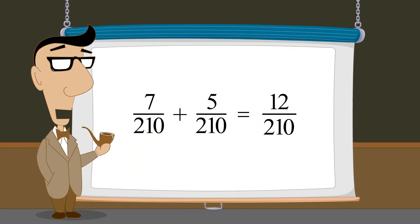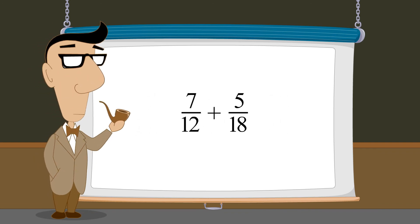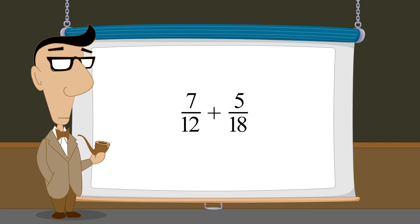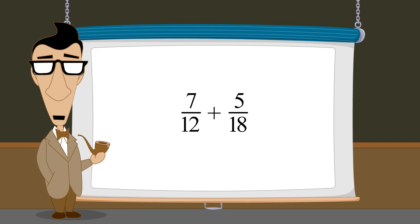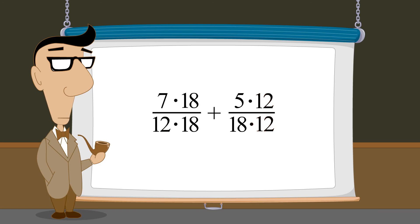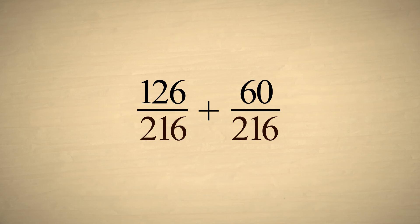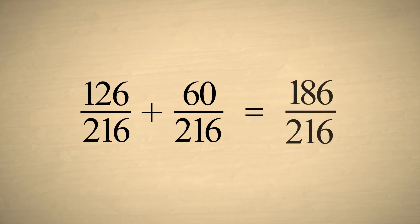To see the advantage of using the least common denominator, let's take the example we looked at in the beginning of the lecture: seven-twelfths plus five-eighteenths, and find a common denominator as we did in the previous lecture, multiplying the top and bottom of each fraction by the other fraction's denominator. Using this technique, we end up with a common denominator of two-hundred-sixteen, and a sum of one-hundred-eighty-six two-hundred-sixteenths.